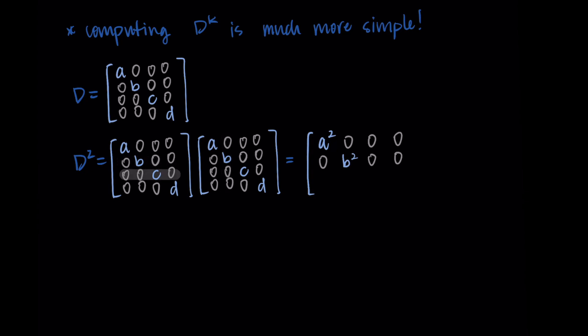I repeat this down. I'm getting zero, zero, C squared, zero, and then zero, zero, zero, D squared.